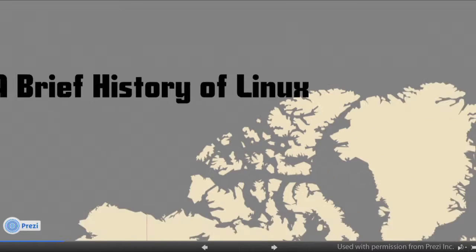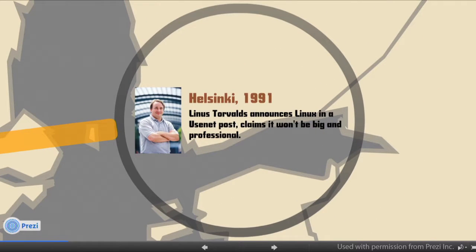The story begins in Finland, in Helsinki in particular. In 1991, Linus Torvalds, a student at the University of Helsinki, started tinkering with an IBM x86 compatible computer. He had just started using the Minix operating system, which is a microkernel meant for educational purposes but is not open in nature. Linus wanted something that he could tinker with and use himself, so he started building his own kernel and his own operating system.